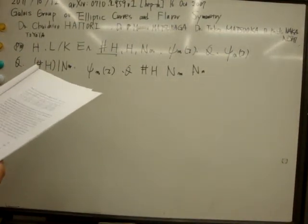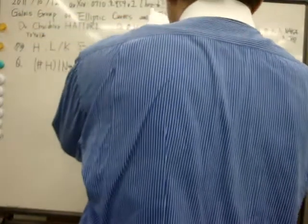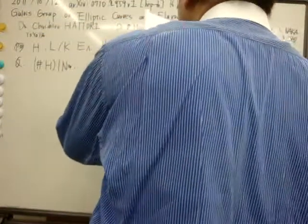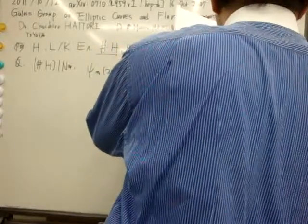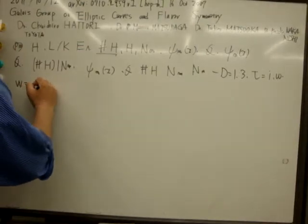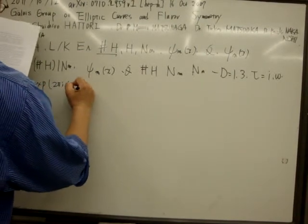As a concrete example of the elliptic curve with CM, we now consider two cases: minus d equals 1, 3, which means tau equals i omega, where omega is exp(2πi/3).